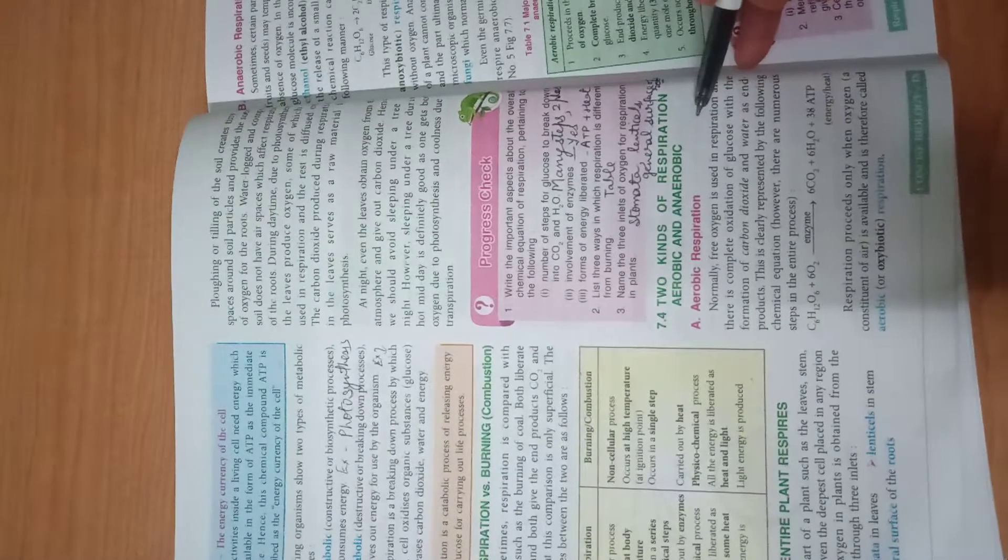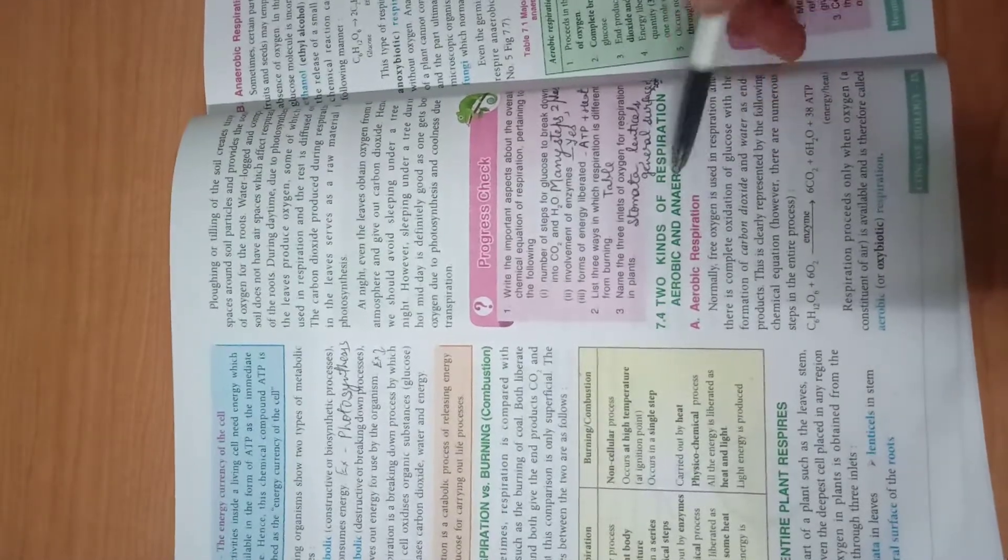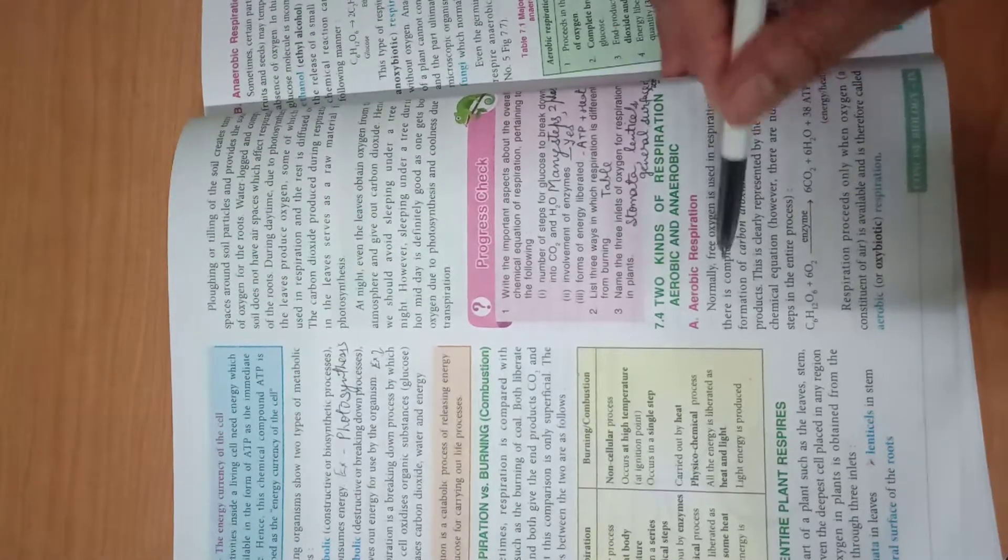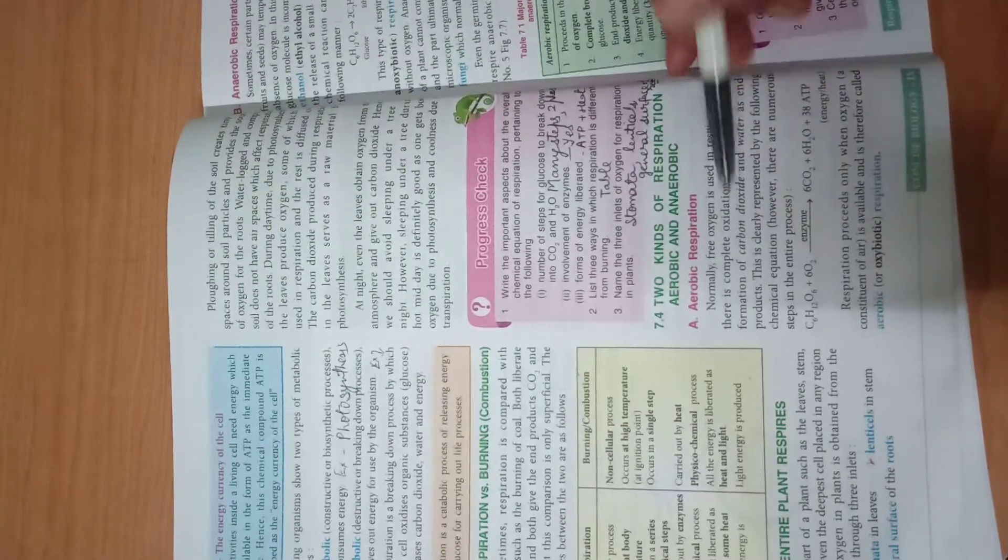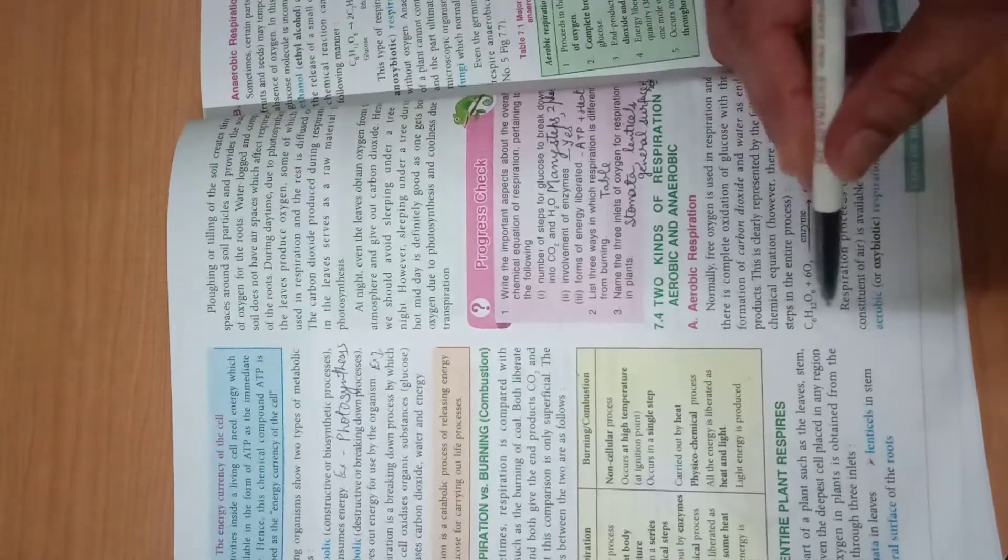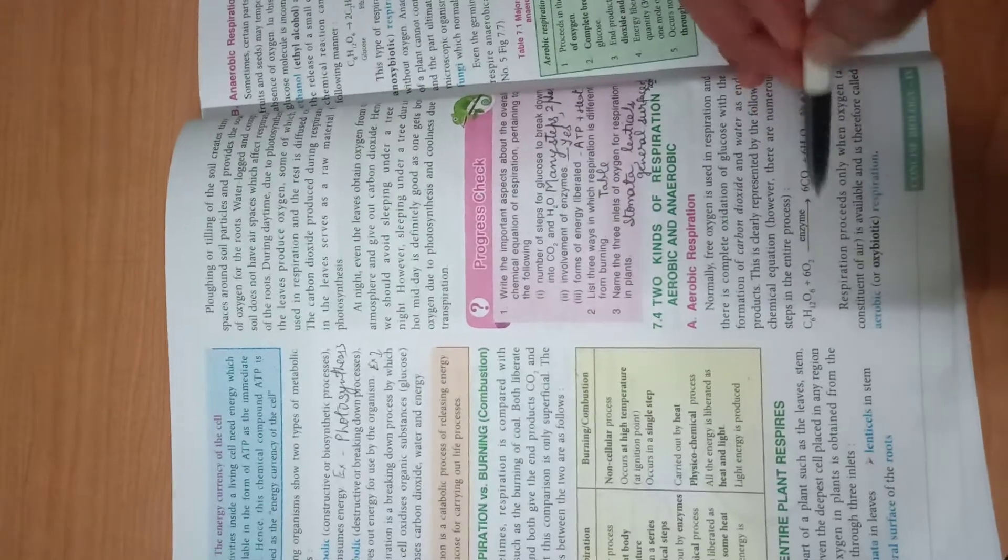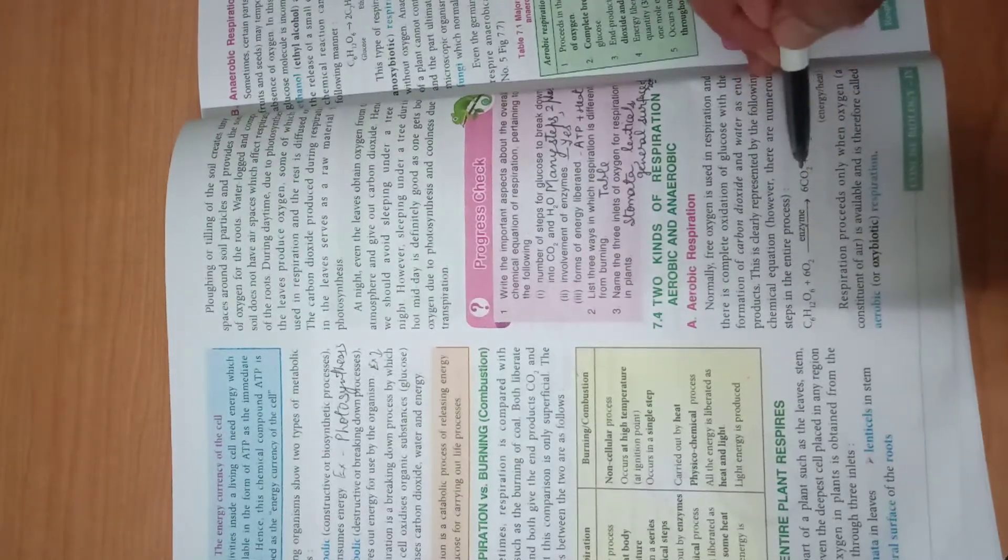Two kinds of respiration are there: one is aerobic and second is anaerobic. In aerobic, free oxygen is used in respiration and there is complete oxidation of glucose with formation of carbon dioxide and water as end products. This is the reaction: glucose molecule C6H12O6 plus 6O2 in presence of enzymes makes 6CO2 plus 6H2O plus 38 ATP.